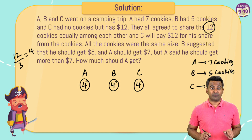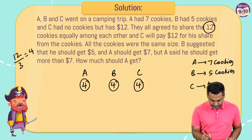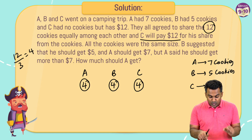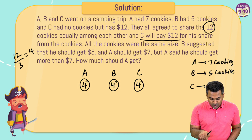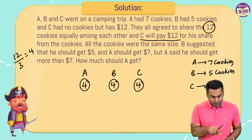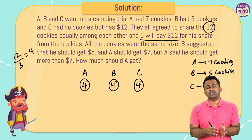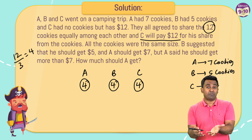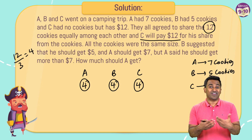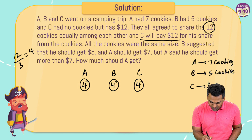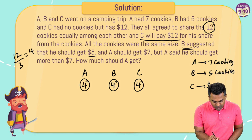Since C did not have any cookies, he's going to pay twelve dollars for his share of the cookies. And it makes sense — whoever gave C more cookies is going to get more money. All cookies were the same size.